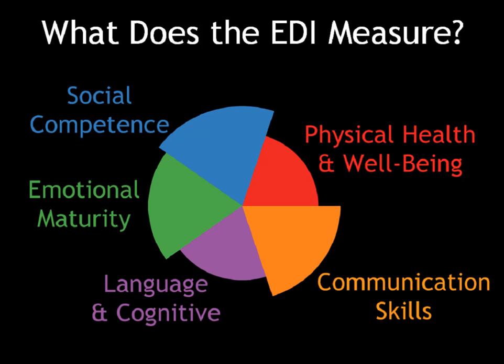These five scales map onto the three broad domains of human development — the physical, the social-emotional, and the language and cognitive — that have a lifelong impact on health, well-being, learning, and behavior, and are also the evolving capacities recognized by the United Nations Convention on the Rights of the Child.